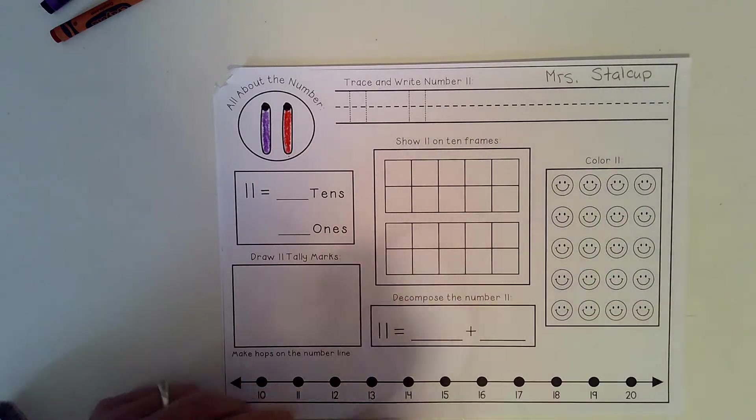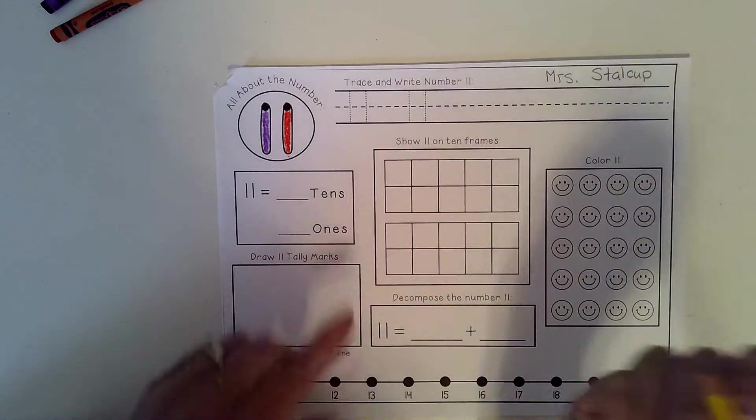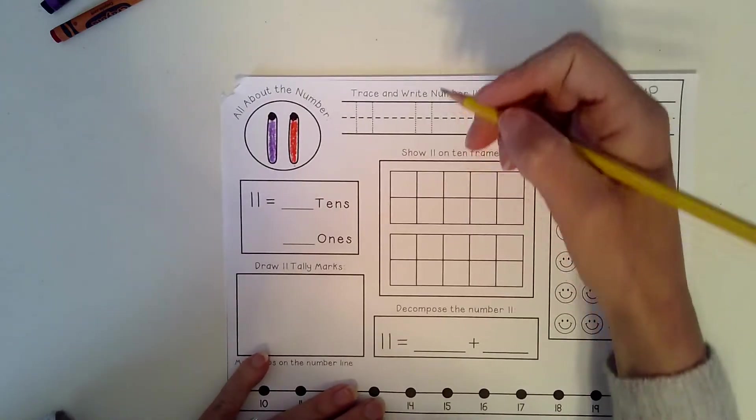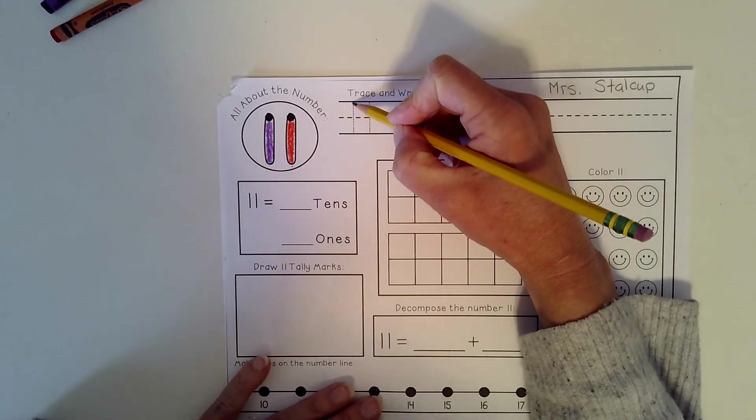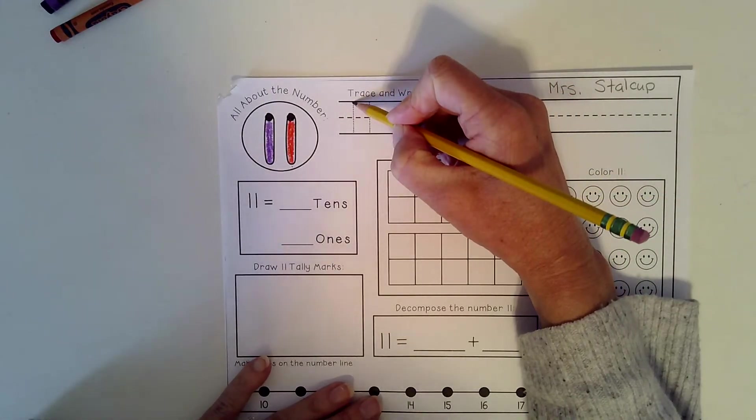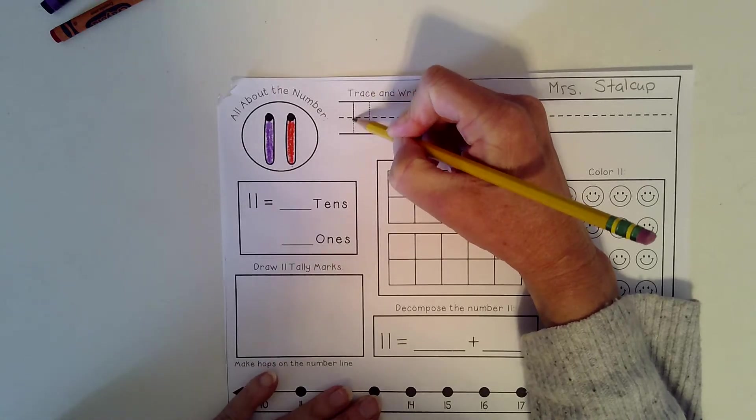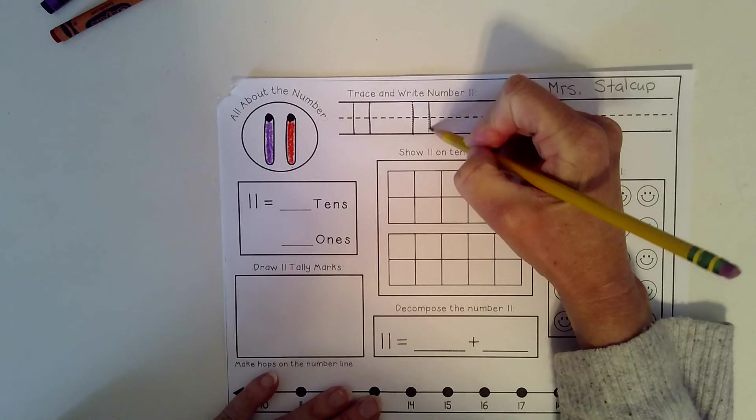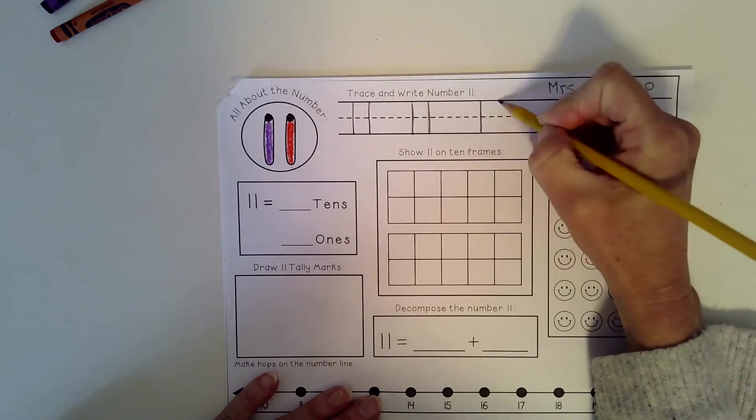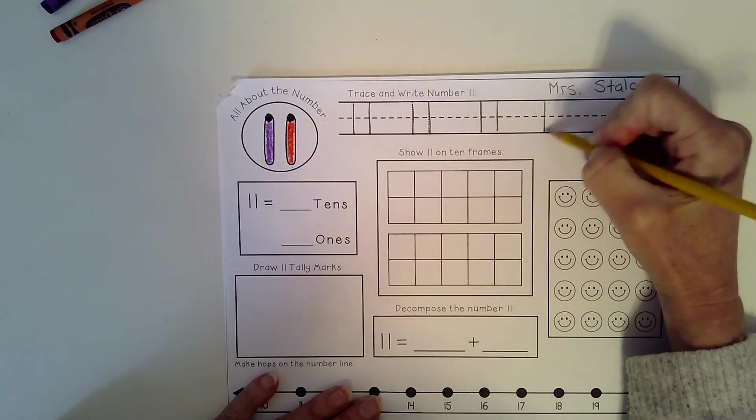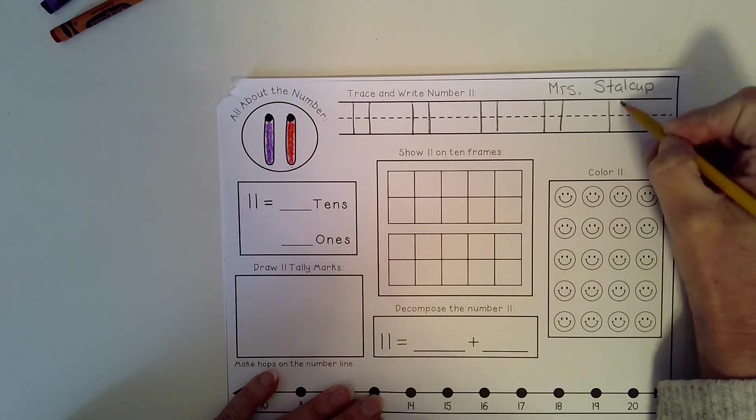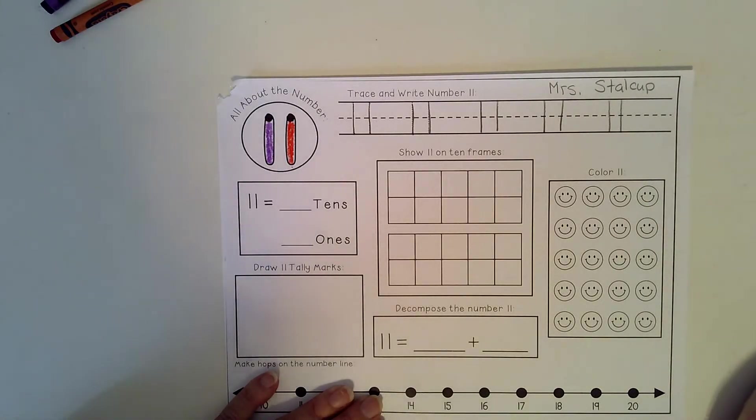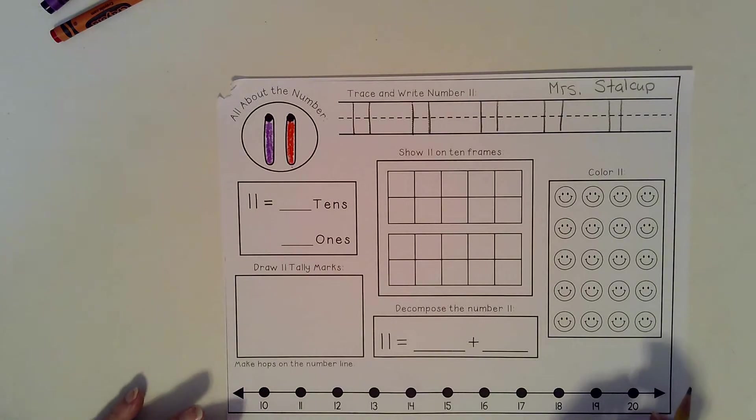Before we do our experimenting with the number though, let's go ahead and trace the number 11. So we're going to start at the sky. Numbers always start at the sky. And we'll go 1, 10, 1 for 11. Let's try some on our own. Nice. So we know how to make the number 11.